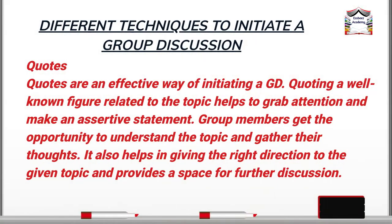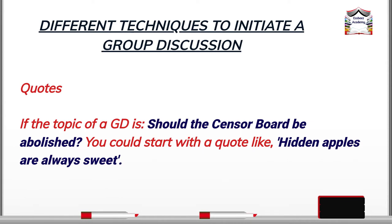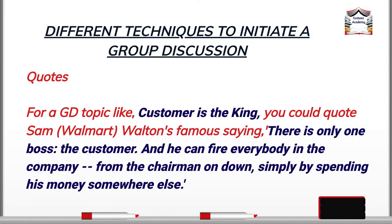The first technique we are going to look at is using quotes. Take for example a topic given to you: 'Should the censorship of alcohol be abolished?' You can begin the discussion with the quote 'hidden apples are always sweet' — that is, forbidden fruit is the sweetest — meaning whatever you are prohibited from doing generates the maximum curiosity. Then you can proceed with whether you support or don't support the topic.